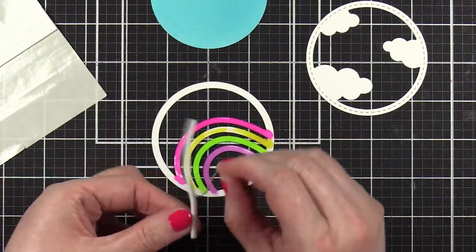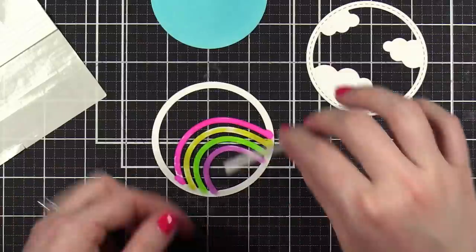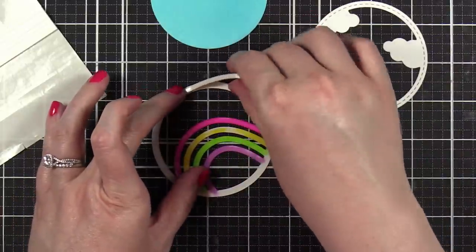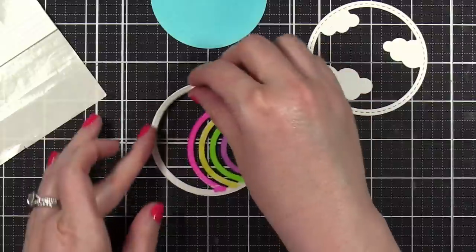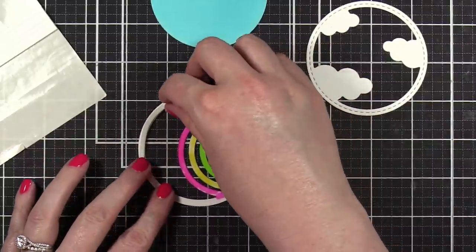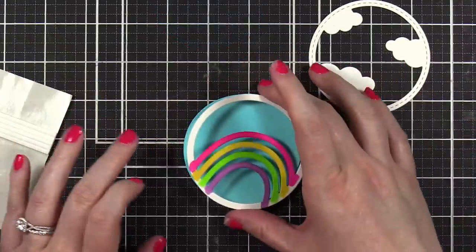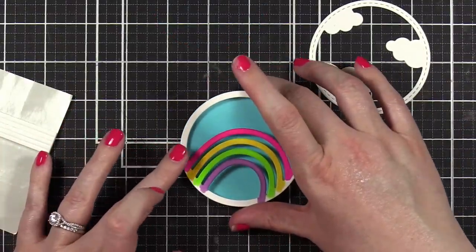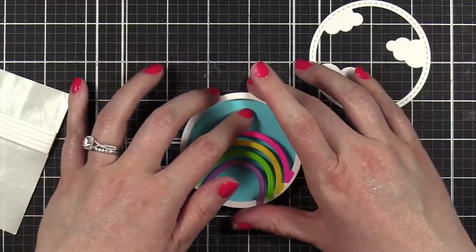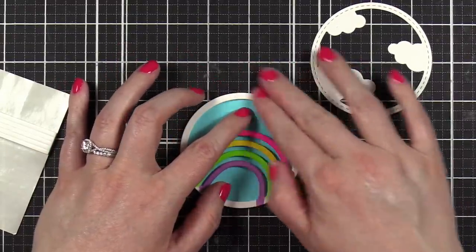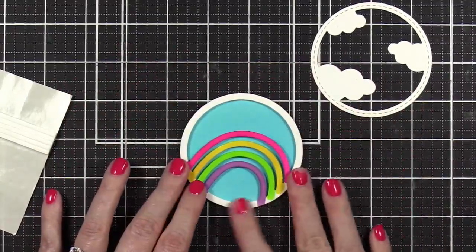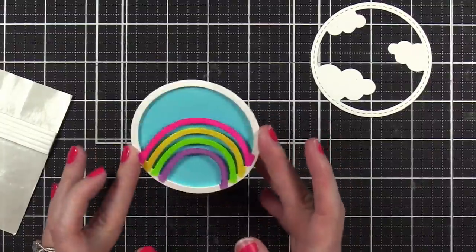I'm gonna do that by taking it off the sheet and then I can manipulate the foam and have it go around the circle perfectly. We just have to get this little guy kind of right on top. There we go! So you're gonna get that shadow underneath. Doesn't that look so great?